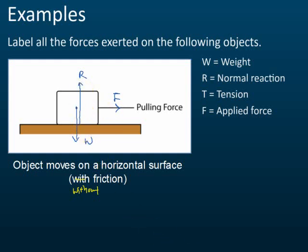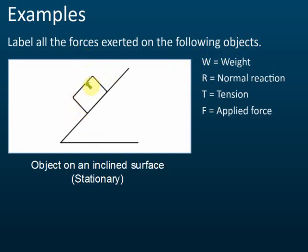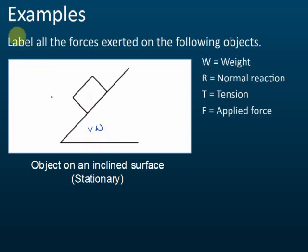Now there is an object resting stationary on an inclined surface. Tell me what forces act on this object. Weight — yes, weight always acts vertically downwards. And normal reaction — yes, the normal reaction is always 90 degrees with the surface.